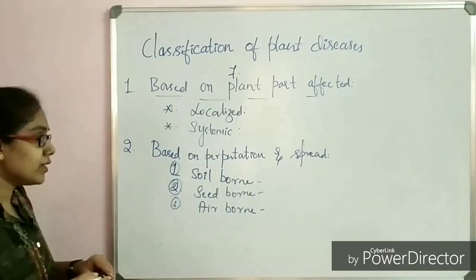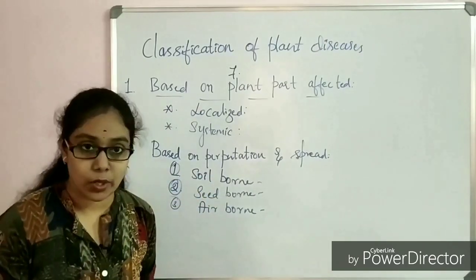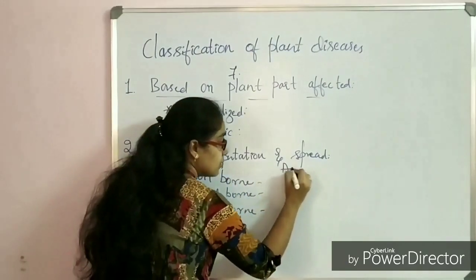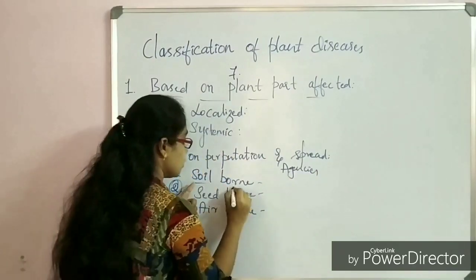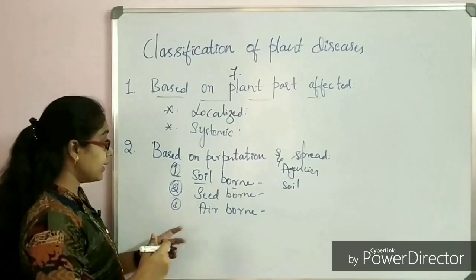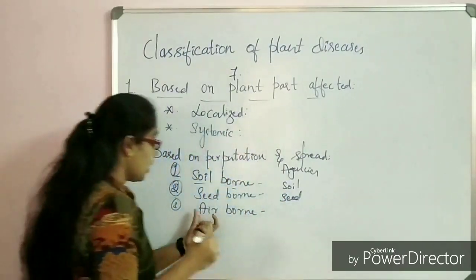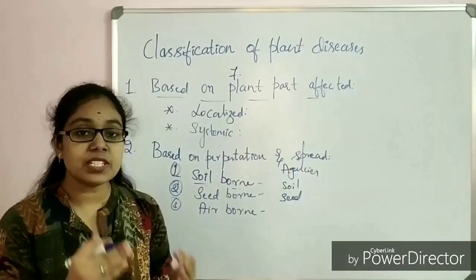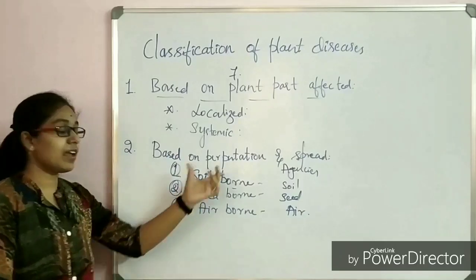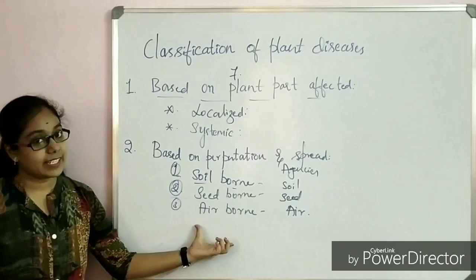In soil-borne disease, the pathogen perpetuates through the agency of the soil and enters the host plant through the soil. In seed-borne diseases, the pathogen enters through the seed. Whereas in air-borne diseases, the pathogen disseminates through the air. So in the second category we have three types: soil-borne disease, seed-borne disease, and air-borne disease.